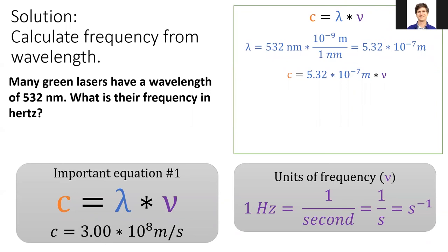And the speed of light will always be given to you on an exam. If we solve for frequency, we get 5.64 times 10 to the 14 hertz, or 5.64 hundred trillion wiggles per second in the color green.